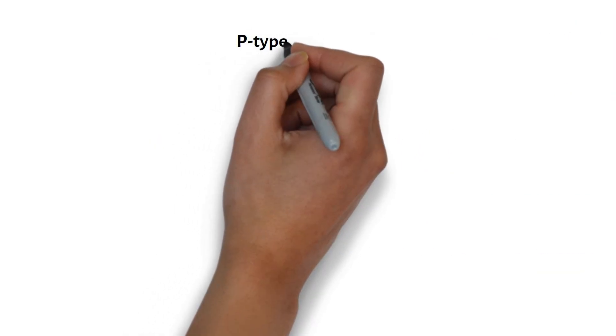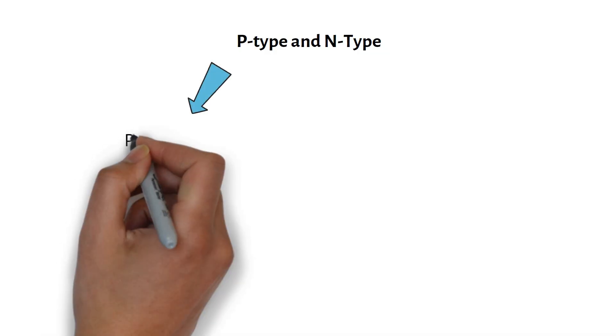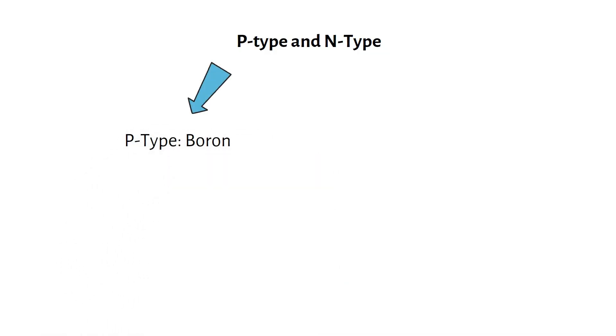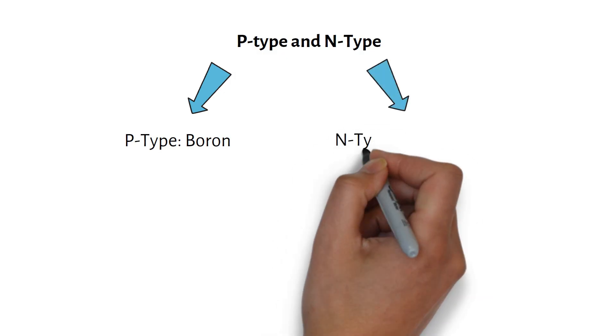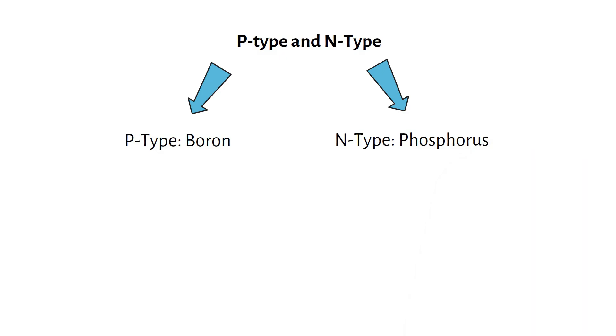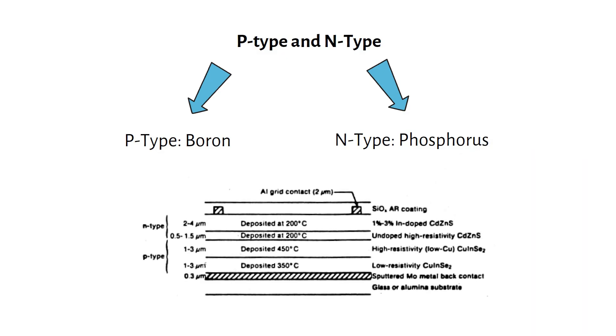Some panels are marketed as N-type. Before that, we had P-type. So what's the difference? P-type cells are doped with boron. They've been the industry standard for a long time. Affordable, reliable, but with slightly lower efficiency and higher degradation. N-type cells are doped with phosphorus. They're more efficient, degrade less over time and last longer. They cost a bit more, but are quickly becoming the new standard.